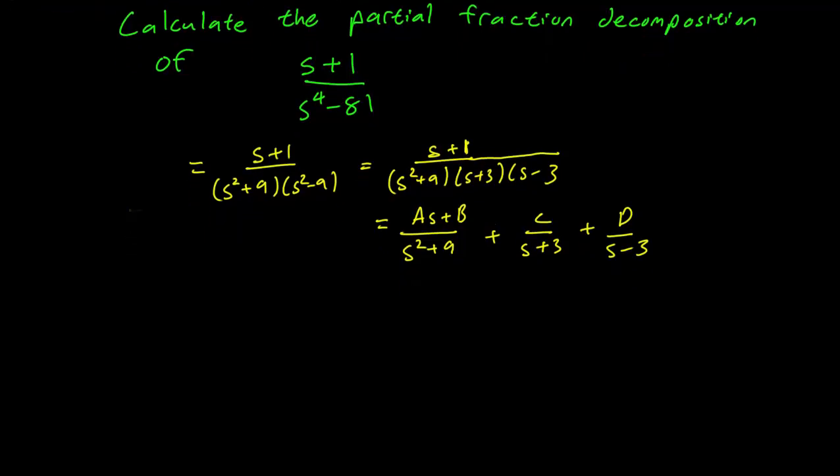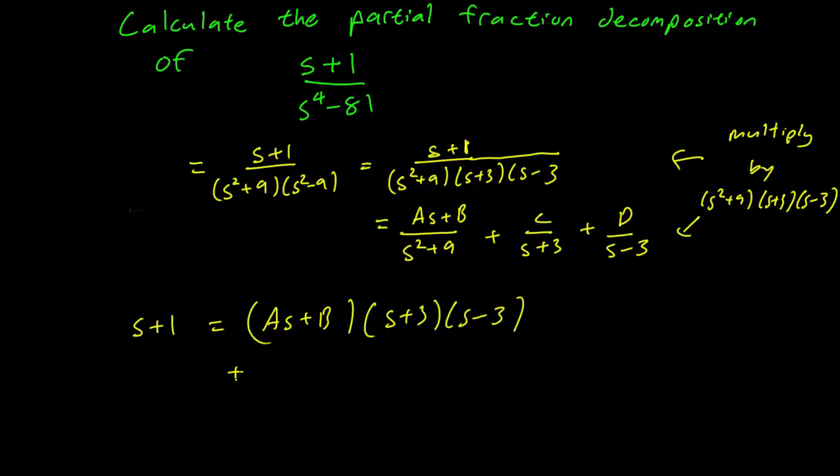So again, let's multiply both terms by the denominator of the first term. Multiply by s squared plus 9, s plus 3, s minus 3. What we get is s plus 1 equals As plus B times s plus 3, s minus 3, plus C times s squared plus 9, s minus 3, plus D times s squared plus 9, s plus 3.